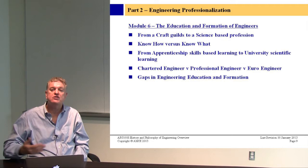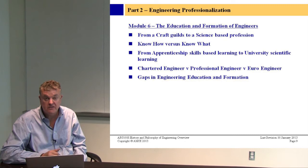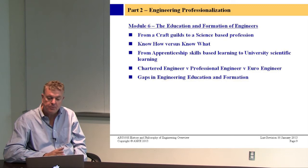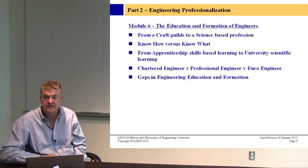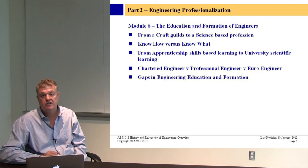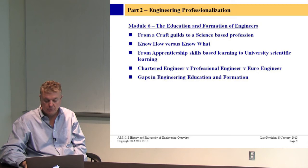We'll look at the differences between a chartered engineer in British Commonwealth countries like Australia and the United Kingdom, and also the Republic of Ireland, comparing that to the professional engineering license prevalent in North America and Canada. These two systems are entirely different and have created totally different engineering cultures and governance. We'll also look at the rise of the European engineer concept, and explore the gaps in engineering education.